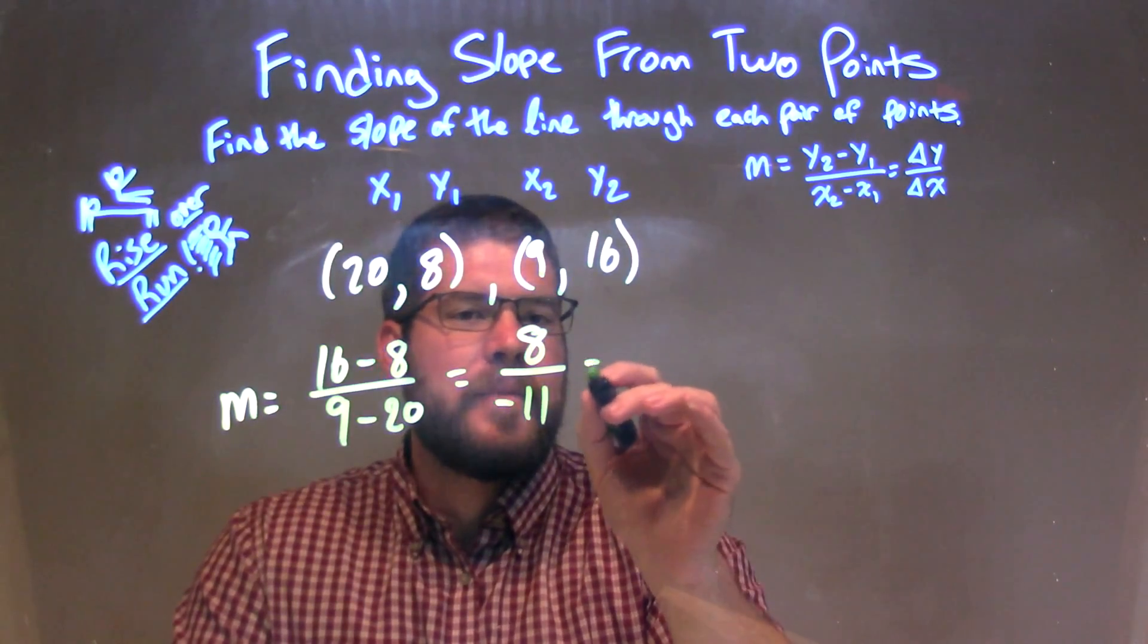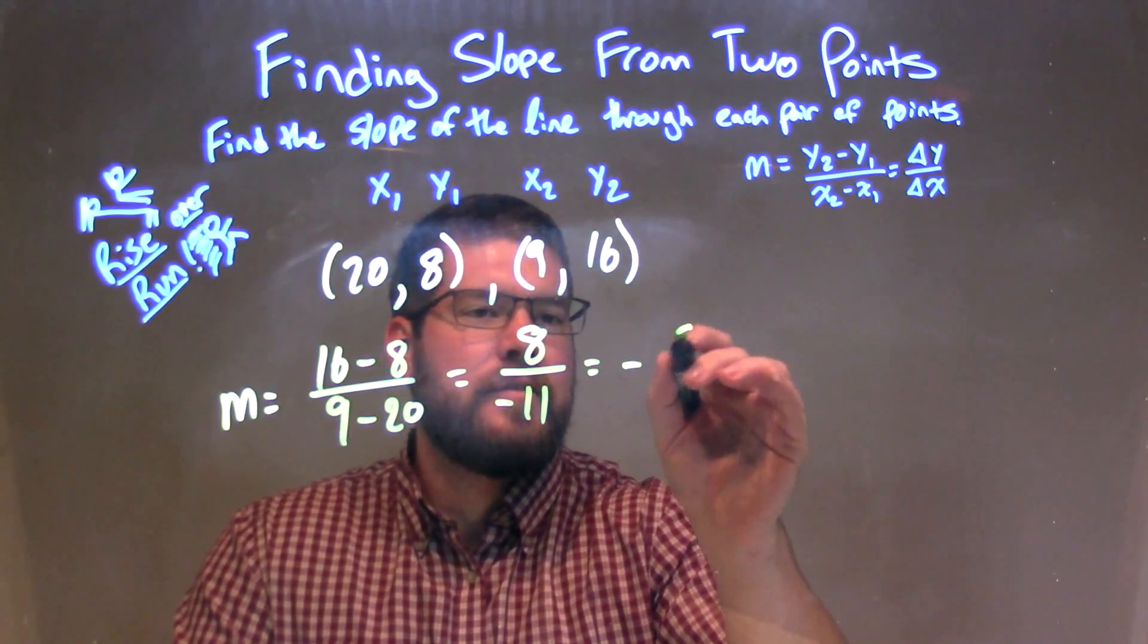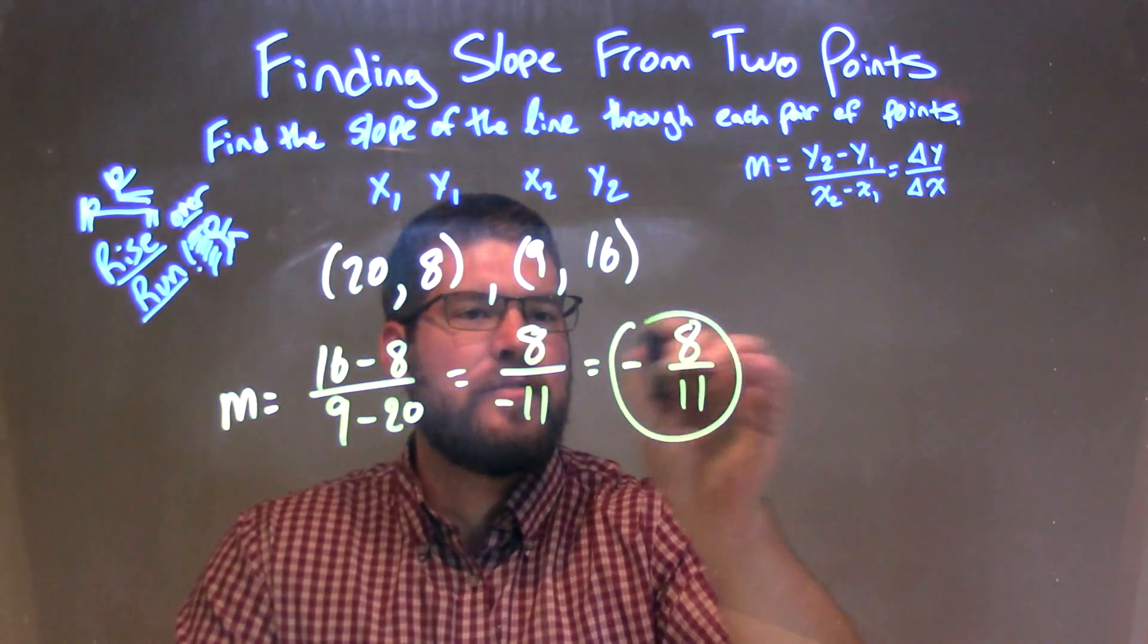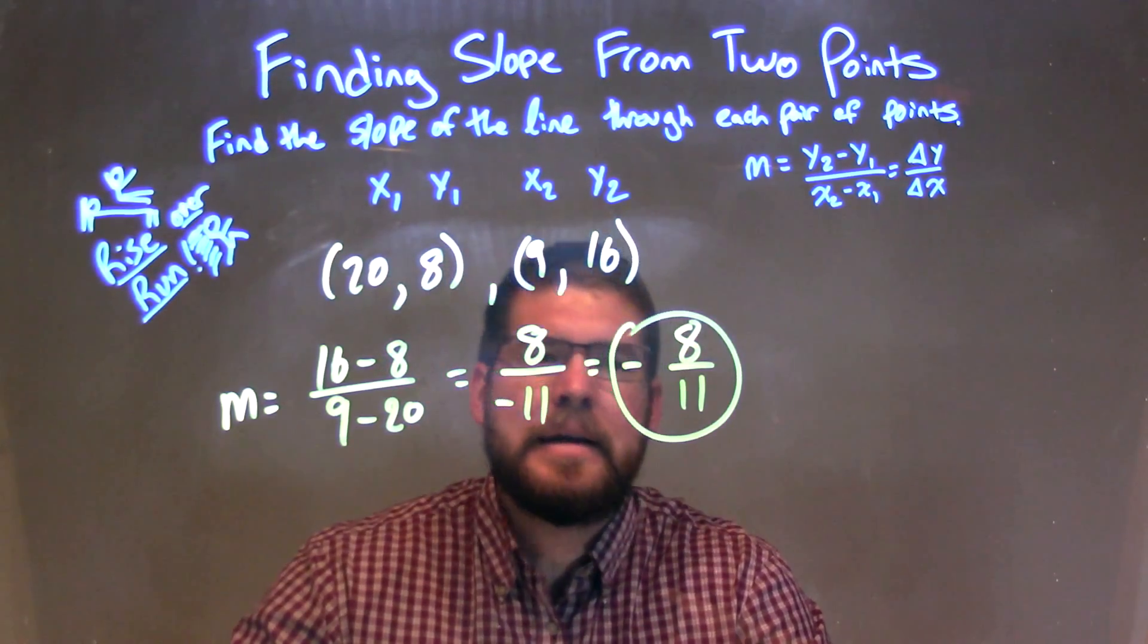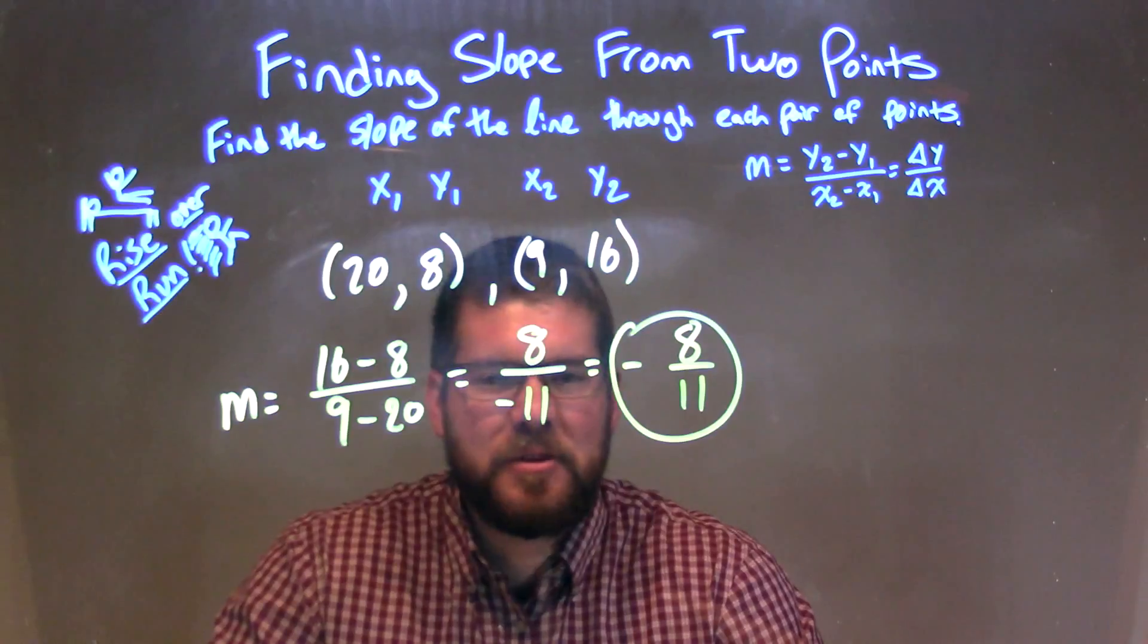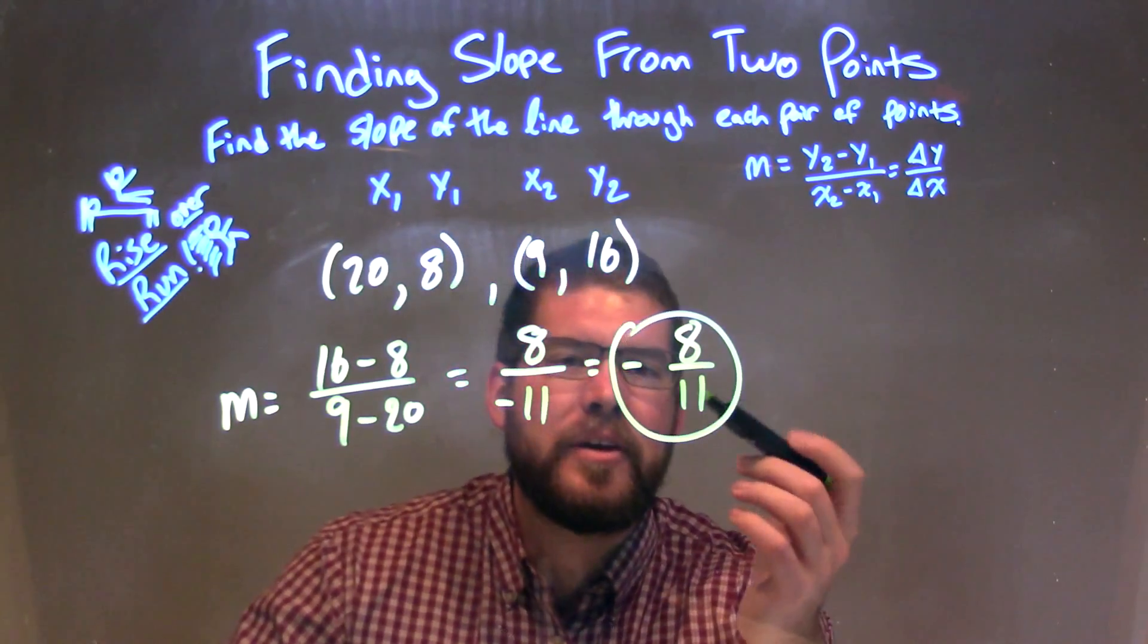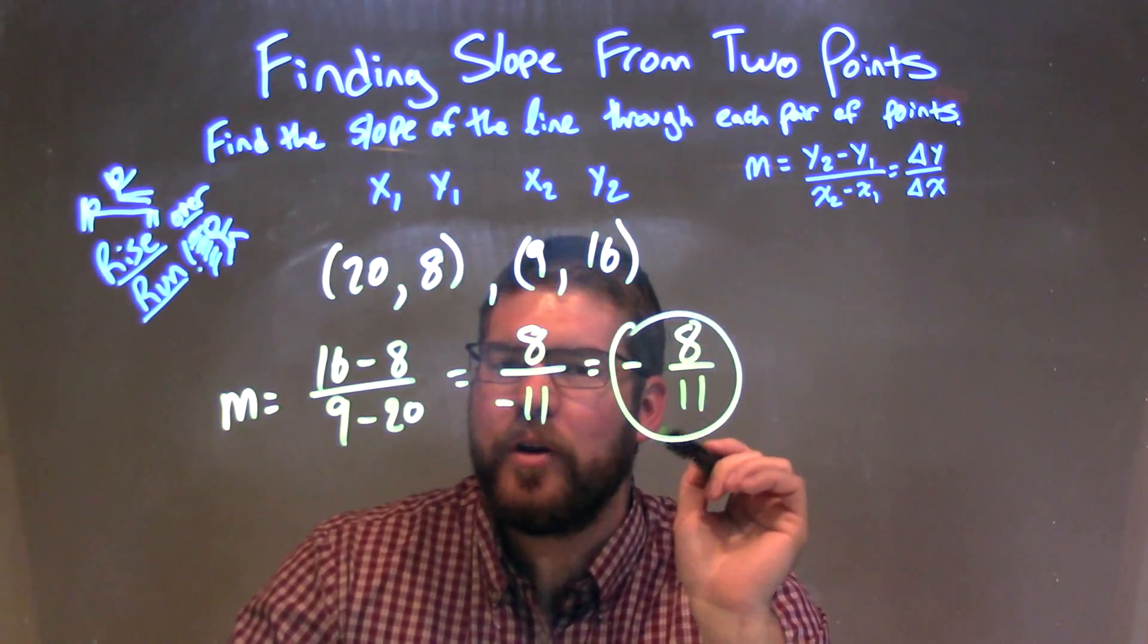Okay, so if you rewrite that, I like to have the negative up front here, so negative 8 over 11 is just my final answer. There's no simplification that can go on there. 8 and 11 have no common factors, so there we go. Our slope, our final answer here is negative 8 over 11.